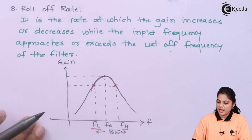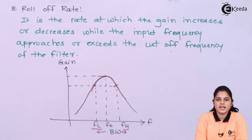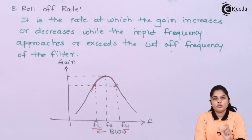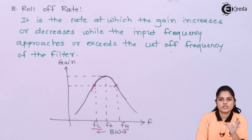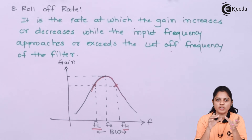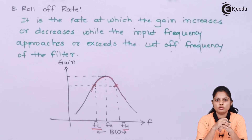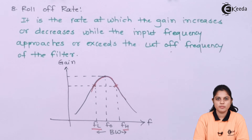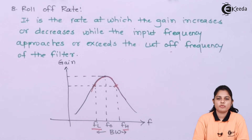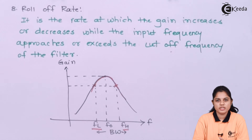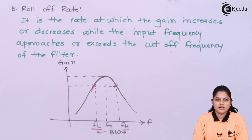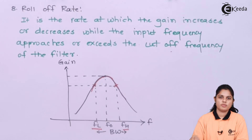So these are the parameters which need to be considered when you design a filter. You need to select components such that you achieve the particular frequency range you want. According to your application, you need to know these terms so that the appropriate filter can be used or chosen for that application. Thank you for watching this video. Stay tuned to Ekida. Do subscribe. Thank you so much.